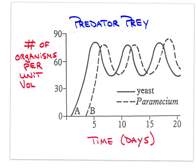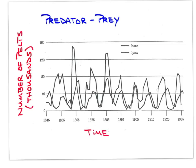Here is predator-prey data from the Hudson Bay Trading Company in Canada, displaying the number of lynx and hare pelts purchased over a long period of time. The first thing to notice is the steady-state oscillation of each population, presumably around a carrying capacity. The curve with the regularly larger numbers would be the hare, the prey. Thinking back to numbers pyramids, there are typically larger numbers of primary consumers supporting smaller numbers of secondary consumers. This curve represents the hare, and this one represents the lynx.